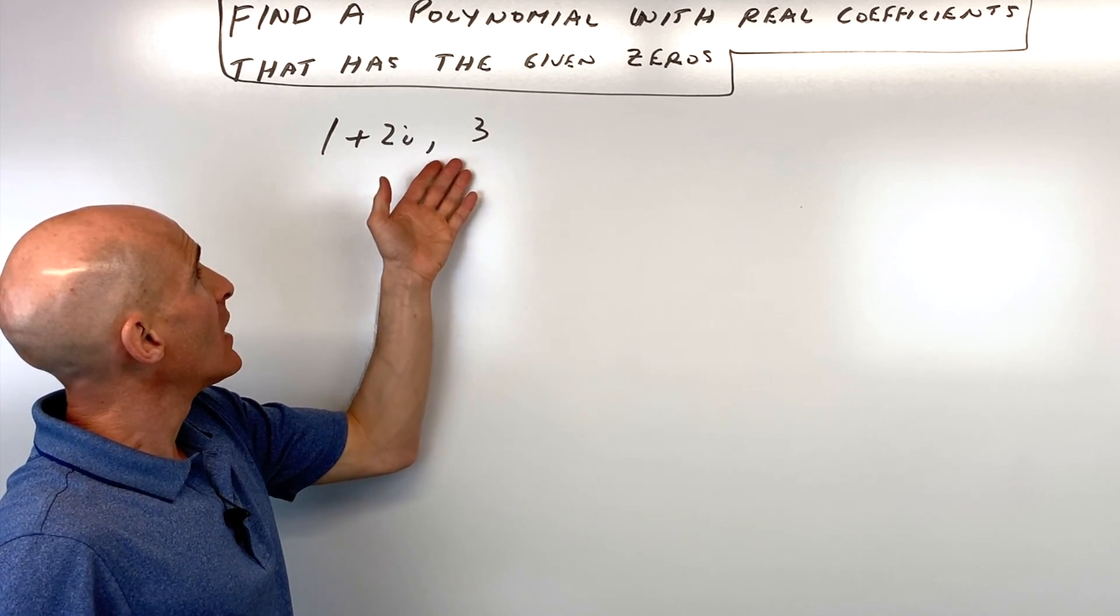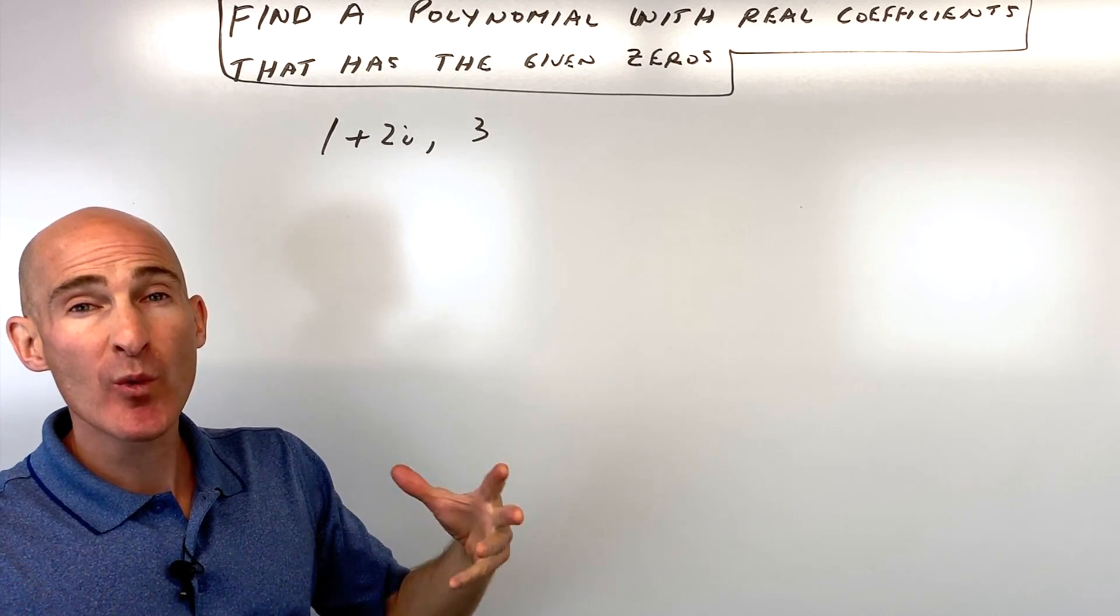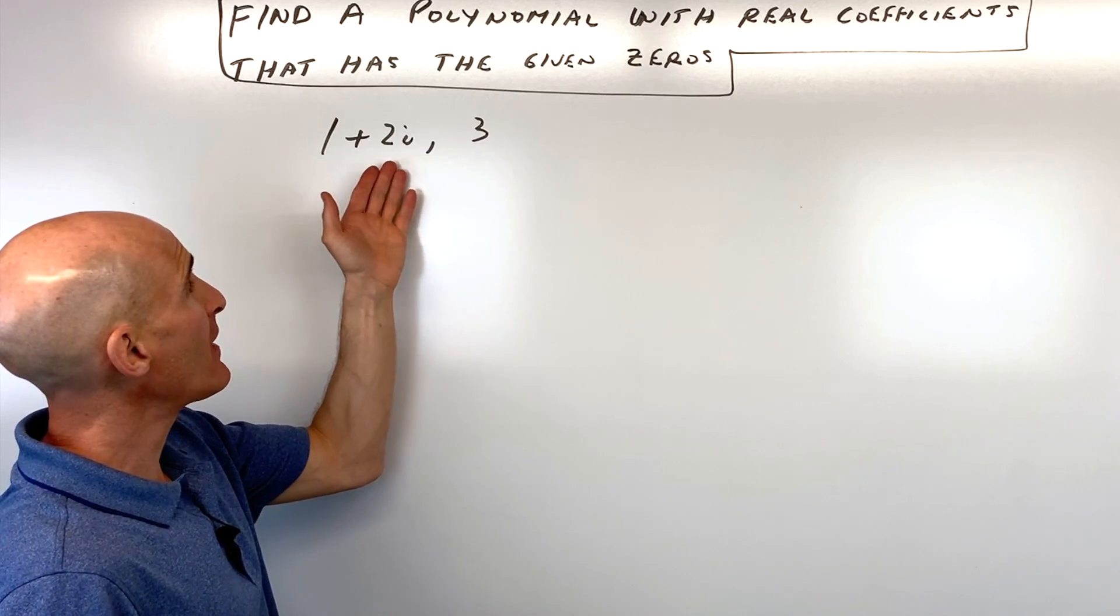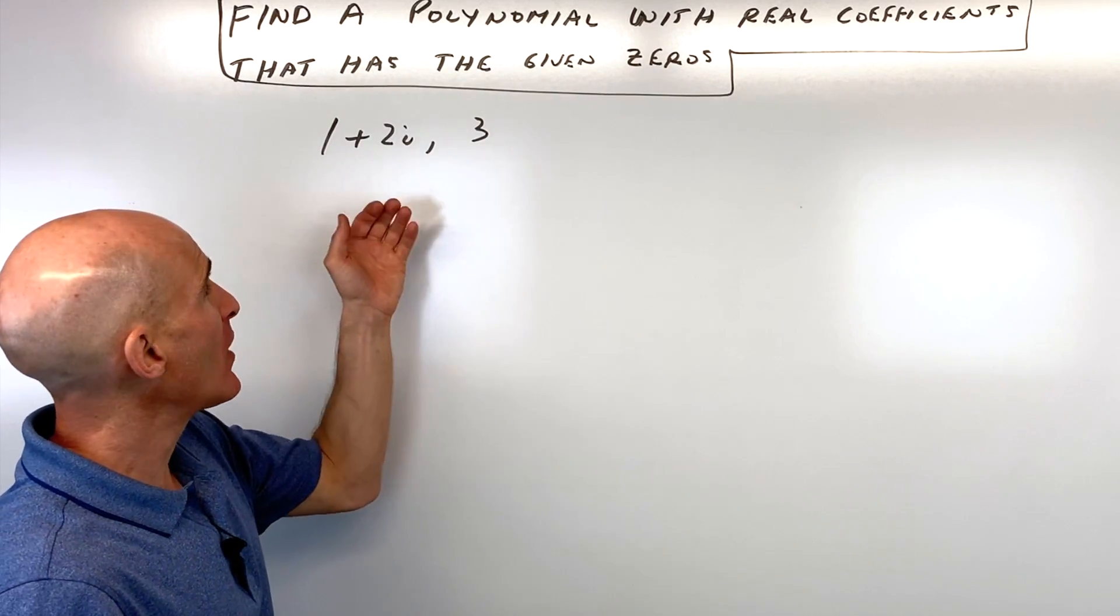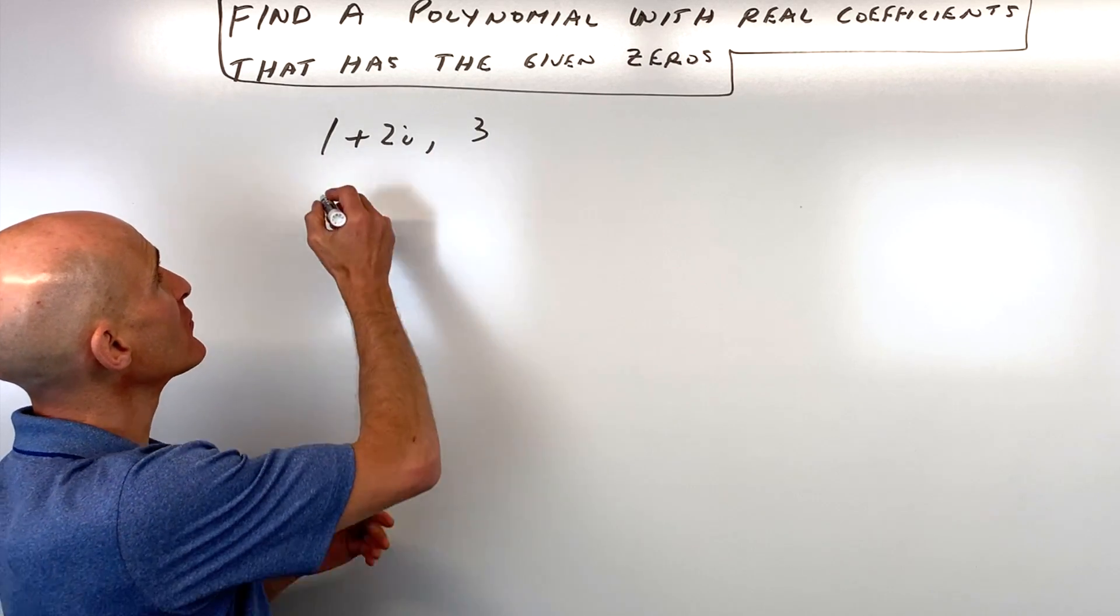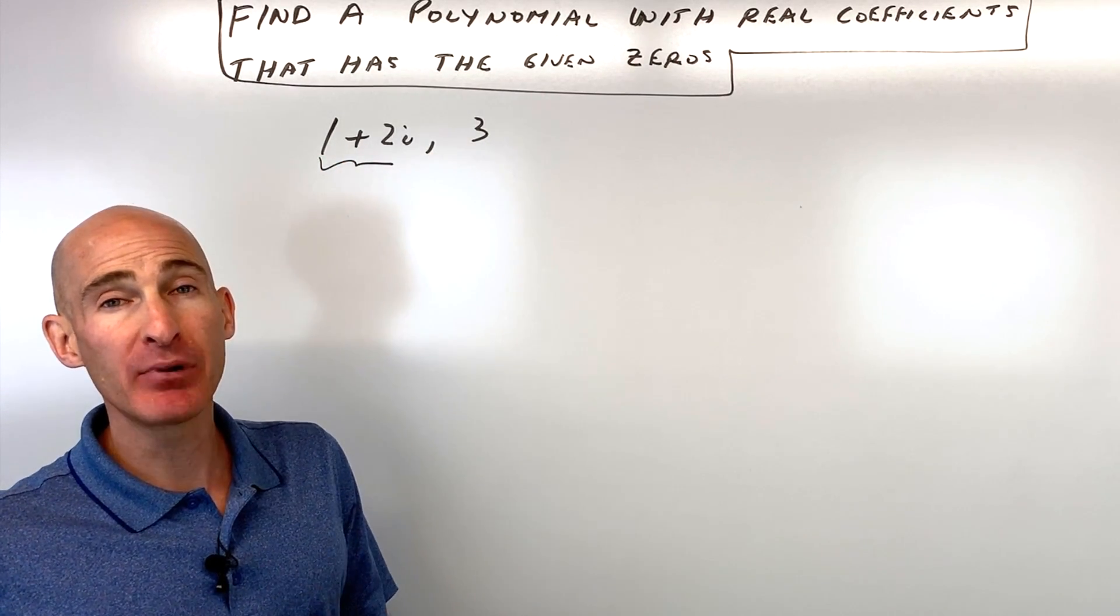Okay, we're given these two roots or solutions or zeros and we want to write the polynomial, but the polynomial has to have real coefficients. So when you have a polynomial with real coefficients and one of your solutions or zeros is imaginary or complex,